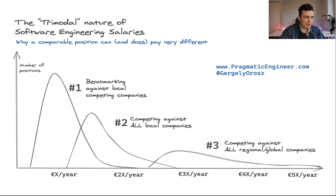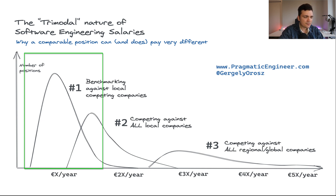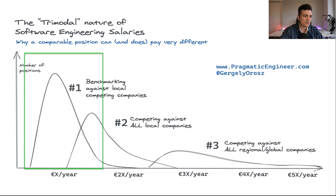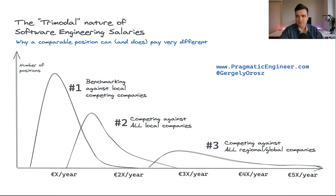Tier one companies are usually small local companies that pay a lesser average salary on the market. These companies do not compete with international companies or large corporations. Usually it's a good choice for a career start. In these companies, the work-life balance tends to be better, and the interview process is much simpler.